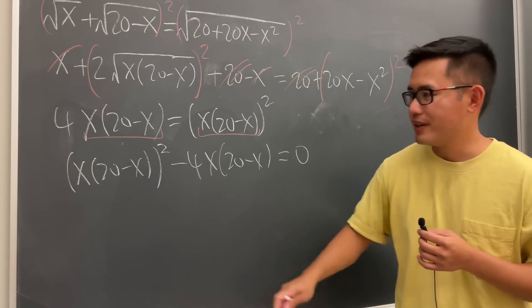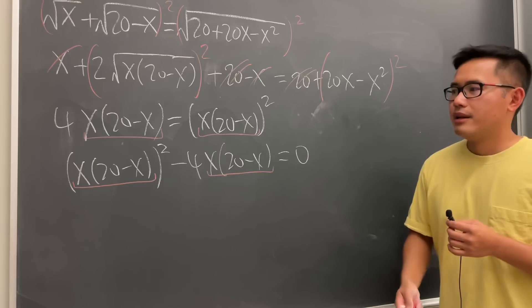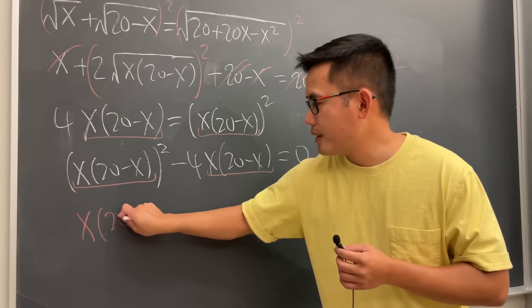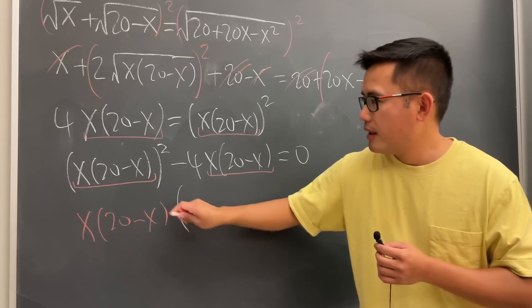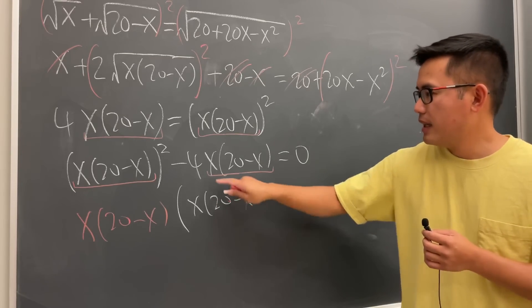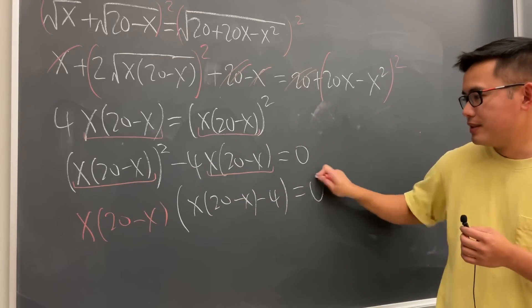So we are going to get parentheses x times 20 minus x and then square minus 4 times x times 20 minus x like so. And that will be equal to 0. In fact, this is the quadratic equation. But in terms of this, so what we can do is now we can just factor it.